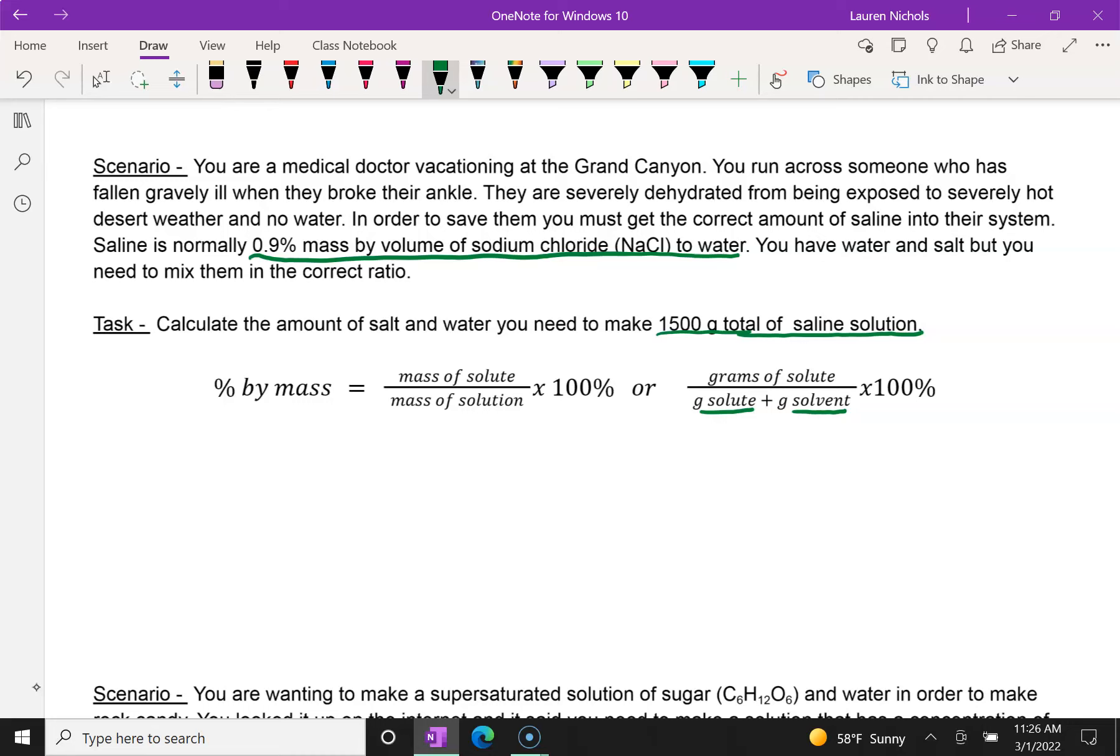So when we're doing percent by mass and we're looking, we know that in this case, our percent by mass is 0.9%. So they actually already gave us the mass percent, and they told us that we want to have a total mass of 1500 grams. So that means they've given us this part and this part, the mass of the solution. But what they want to know is the amount of salt and water. So they want to know the amount of salt, which is the mass of our solute. But they also want to know how much of that 1500 grams is going to have to be solvent. So they're looking at this in two different parts.